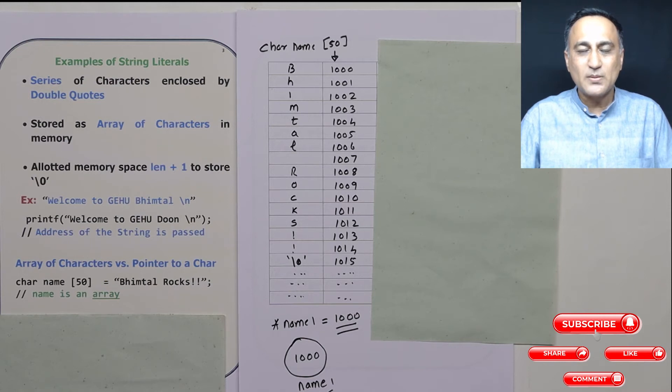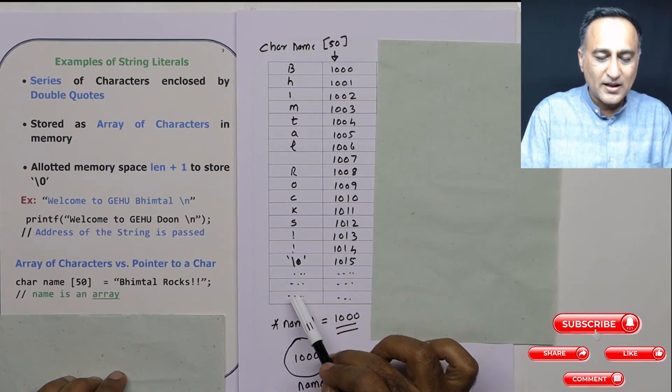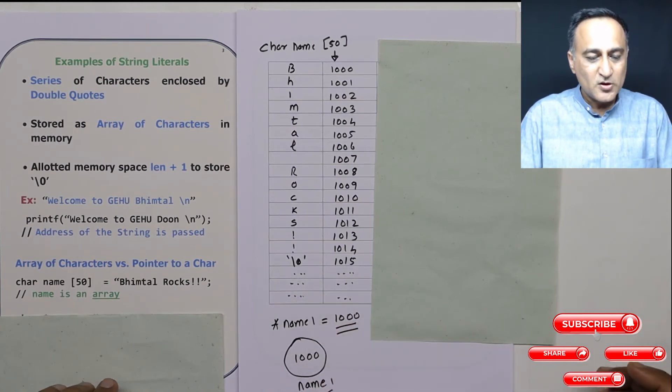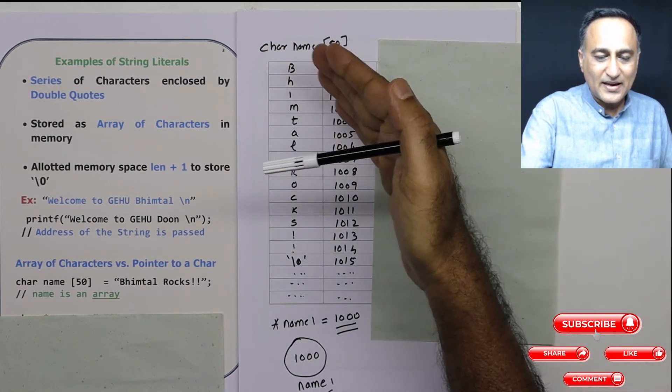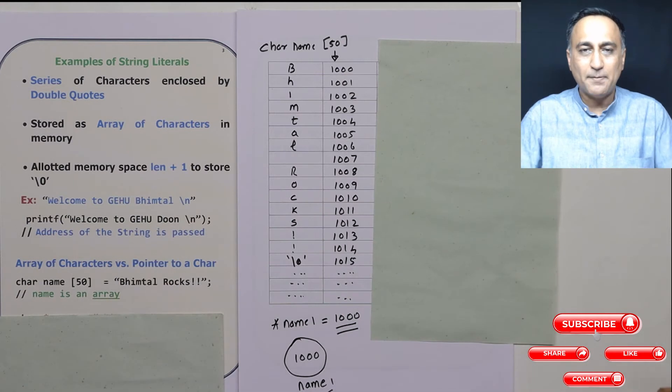After the 1015th character, once the null is placed, the remaining whatever number of characters are there, the next 35 characters are all going to be nulls. Just as when I initialize an array of numbers with one or two numbers and leave the rest, the rest gets zeros. Here, same thing. After the null, it's all going to be null, null, null and so on. When I define a character array name[50], this is how it is exactly going to look in memory.